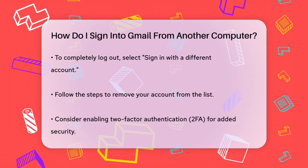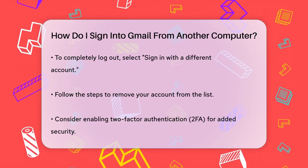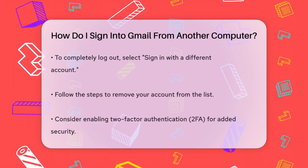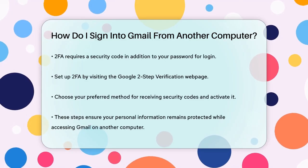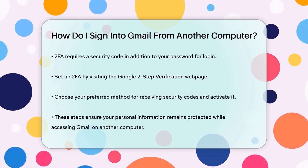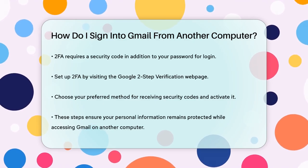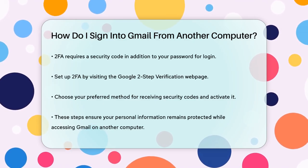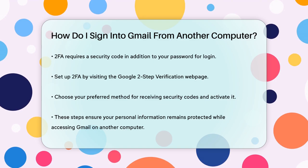For added security, consider using two-factor authentication (2FA) on your Gmail account. This means that even if someone tries to log in from another computer, they'll need not only your password but also a security code sent to your phone or generated by an authenticator app. To set up 2FA, go to the Google two-step verification webpage, choose your preferred method, and follow the prompts to turn it on.